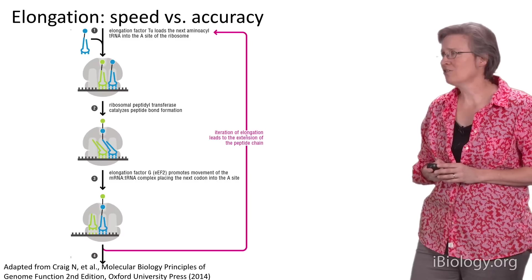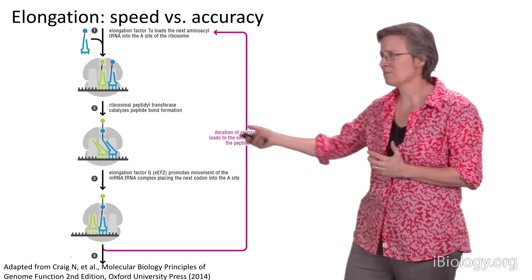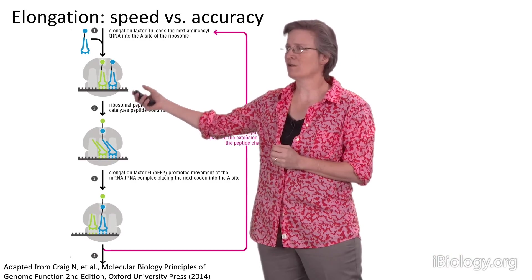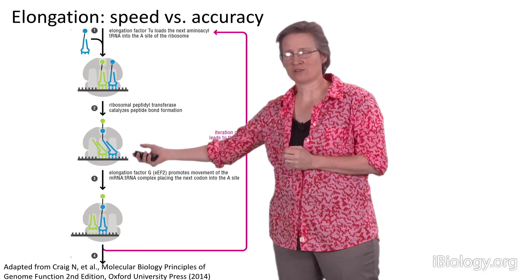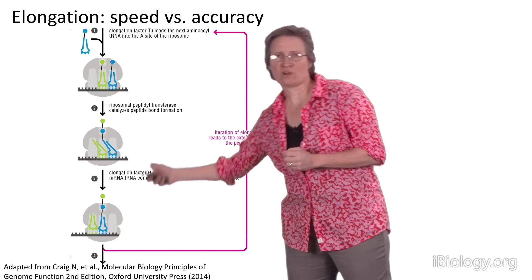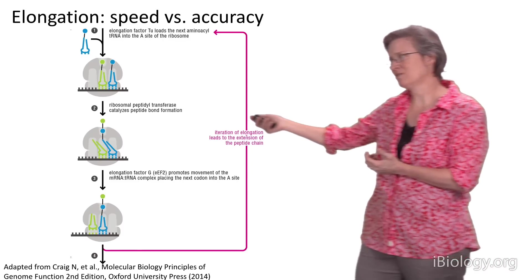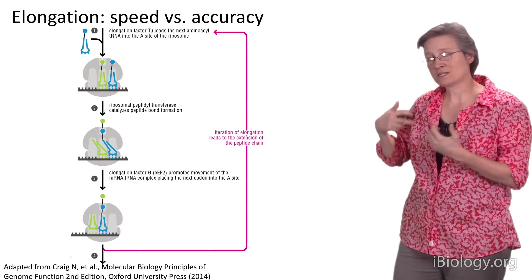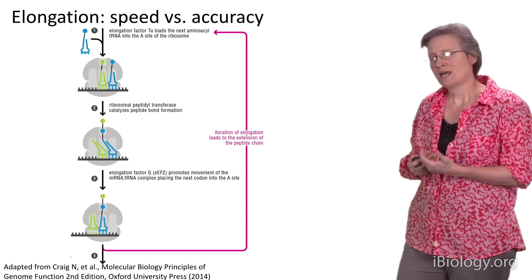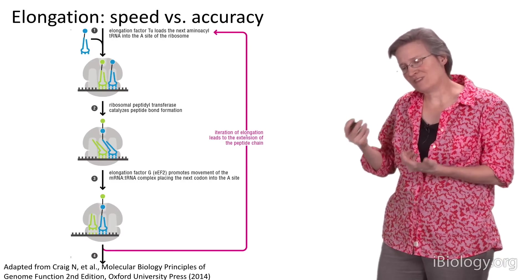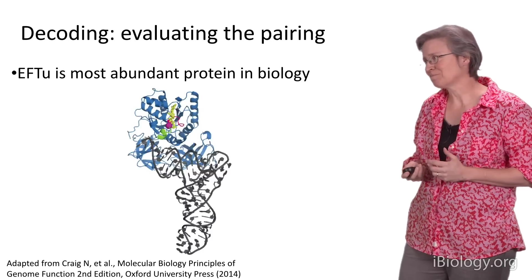Elongation is the process by which each amino acid is added, broken down into three steps: first, selection of the appropriate aminoacyl tRNA; second, peptide bond formation where amino acids are ligated to one another; and third, translocation, where the whole complex is moved along the messenger RNA template to open up the A-site for the next incoming aminoacyl tRNA. This is a highly accurate and relatively fast process, and these different requirements always need to be balanced — going too fast leads to more mistakes.